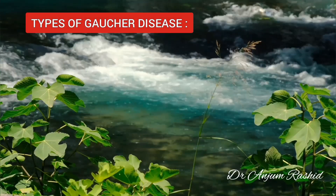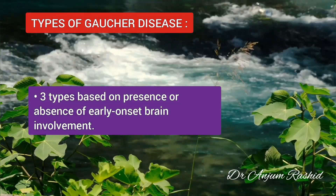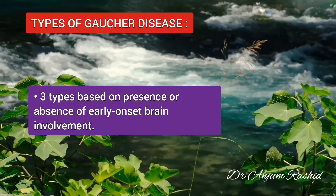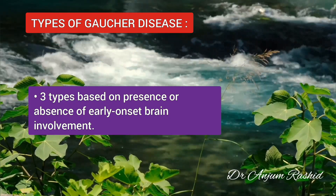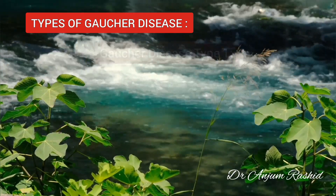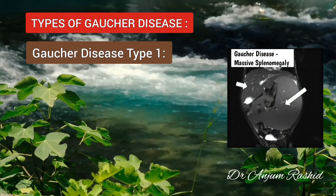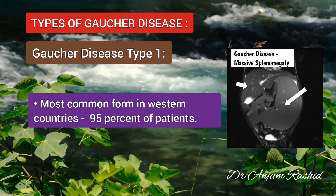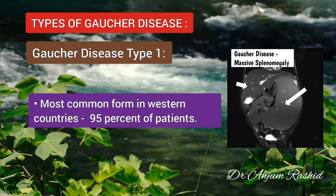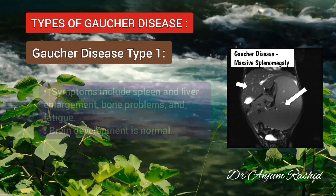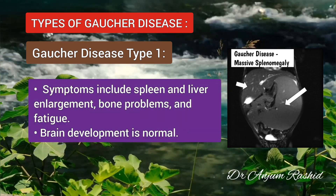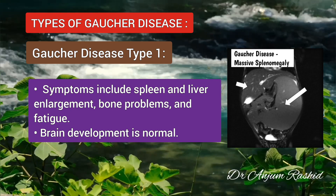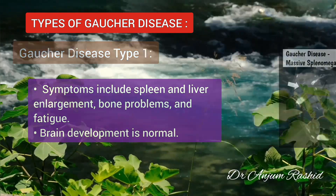Scientists divide Gaucher disease into 3 different types based on the presence or absence of early onset brain involvement. Type 1 is the most common form in western countries, making up roughly 95% of patients there. Symptoms include spleen and liver enlargement, bone problems and fatigue, while brain development is normal.